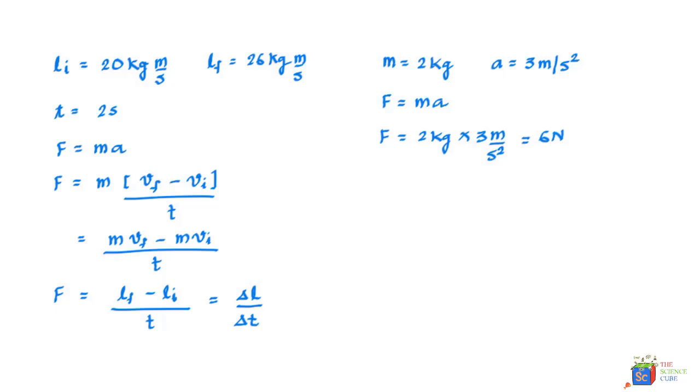And then you can solve this question. You know that will be 26 minus 20 divided by 2 or it will come to about 3 meters per second squared. So you see often the derivation itself gives great clarity around the topic and the numerical problems that you attempt.